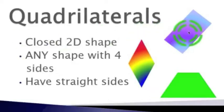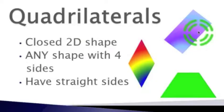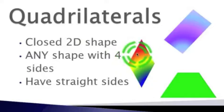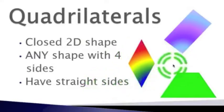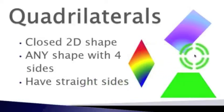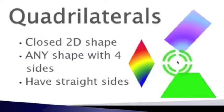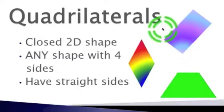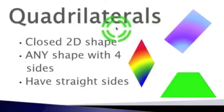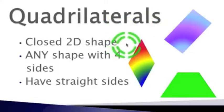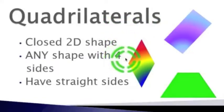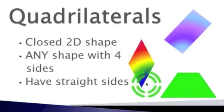The next type of geometry figures we are going to talk about are quadrilaterals. Quadrilaterals are closed two-dimensional shapes with four sides, and those sides must be straight. Looking at these three shapes, they are very different, but all of them have four straight sides. Quadrilaterals are any closed two-dimensional shape with four straight sides.